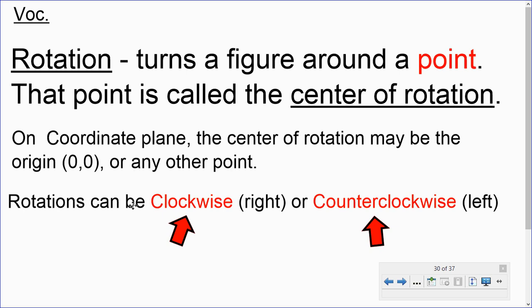So a rotation can be clockwise. Remember, clockwise is going to the right, so here's my arrow. We'll watch it spin to the right. Or it can be counterclockwise, which is going to the left, so let me spin this to the left, in the opposite direction.